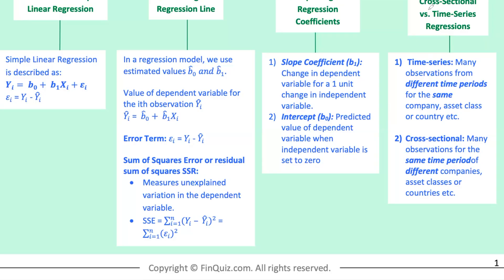There are two main types of data used in regression analysis. Number one is time series, observations from different time periods for the same entity. Number two is cross-sectional, observations from the same time period for different entities. Then there is panel data that combines both types.